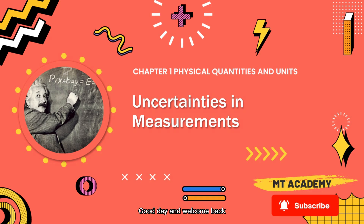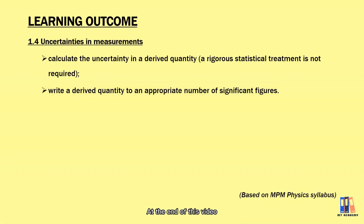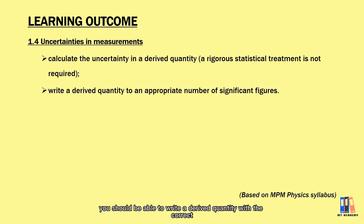Good day and welcome back. Today we're going to talk about the last topic in chapter 1: uncertainties in measurements. At the end of this video, you should be able to calculate the uncertainty or the error in the derived quantity, and also you should be able to write a derived quantity with the correct number of significant figures.